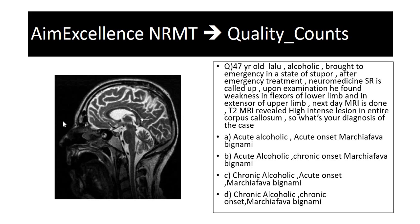Apart from vitamin B supplementation, studies have shown that amantadine has given pretty encouraging results. Amantadine is generally used in Parkinsonism and was earlier used in influenza treatment. There are also certain cases where steroids have given encouraging results.